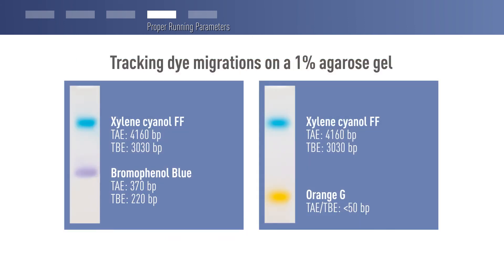Lastly, the optimal running time is determined by the positions of the tracking dyes or empirically by monitoring the DNA migration closely during the run. Run your gel until the bromophenol blue runs approximately two-thirds of the way down the gel. If your sample buffer or loading dye contains other dyes, monitor their progress and stop electrophoresis accordingly.